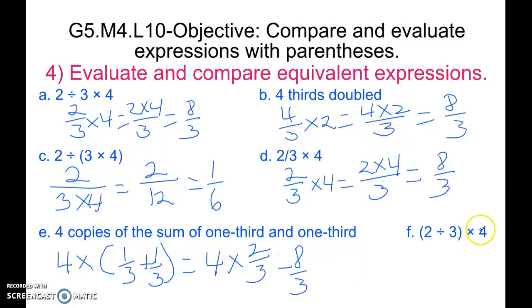In our final expression, 2 divided by 3 times 4, we know that a division problem is the same as a fraction. It's going to be 2 thirds times 4, which again is the same, which is also going to equal 8 thirds. By solving all 6 of these, we see that A, B, D, E, and F all equal 8 thirds. C equals 1/6 is the only one that is different.